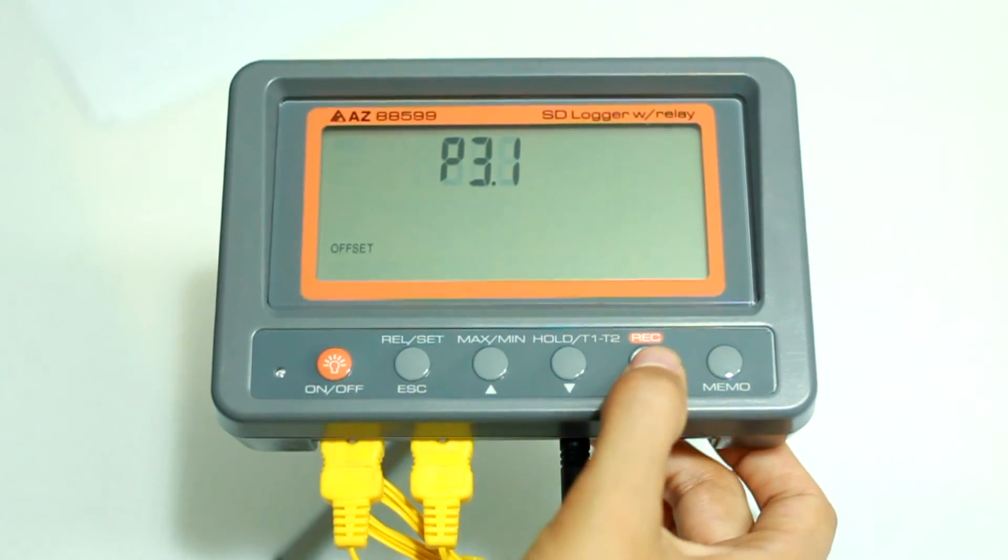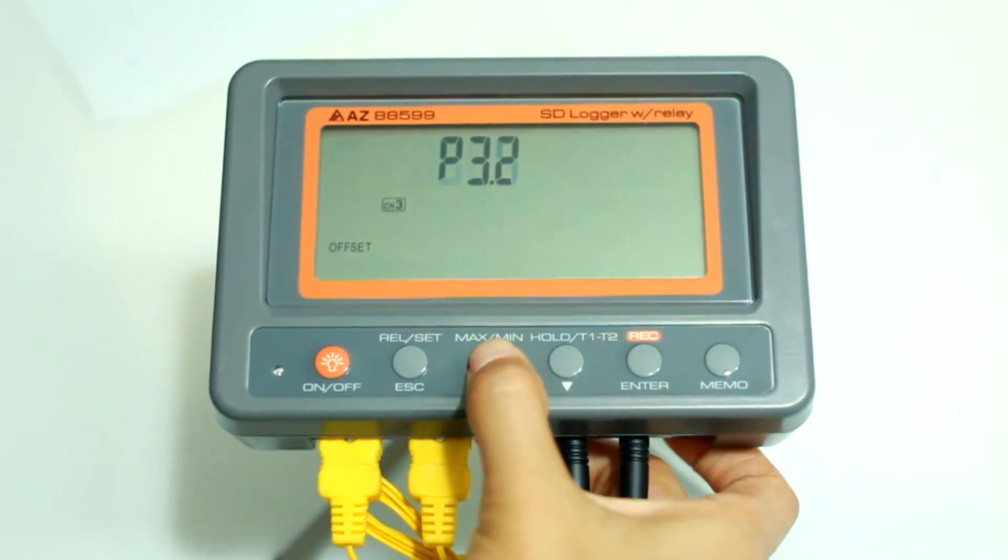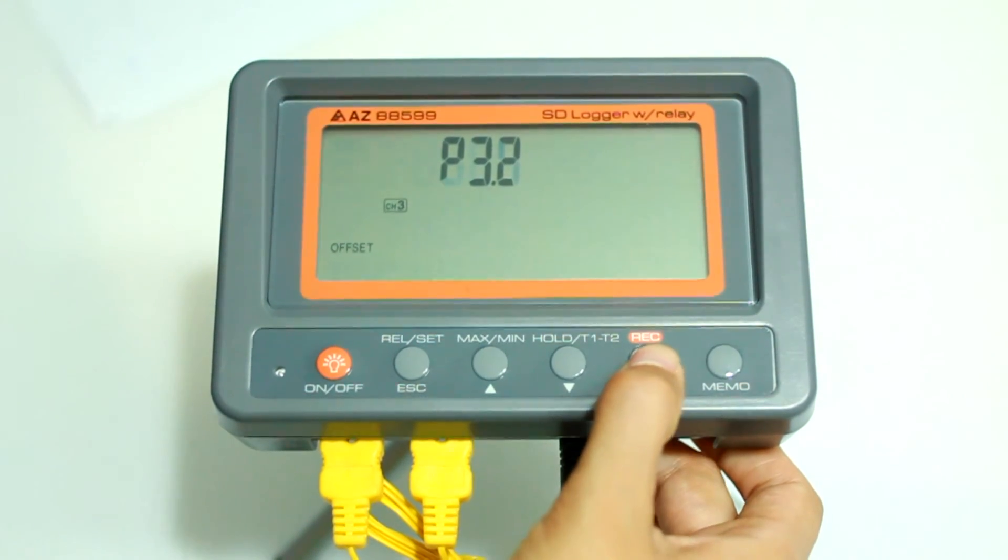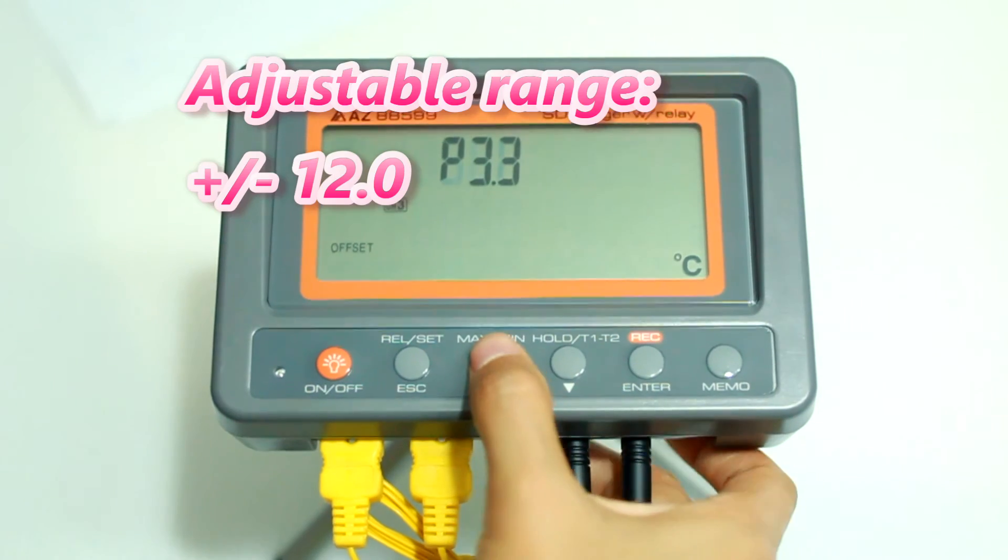Then turn the offset function of that channel to on position. Finally, adjust the value to what you need.